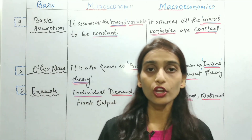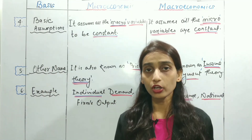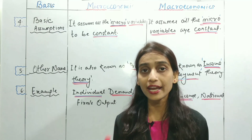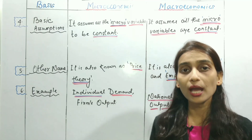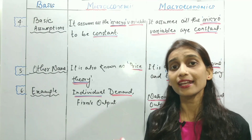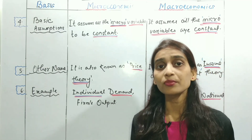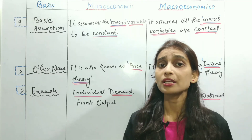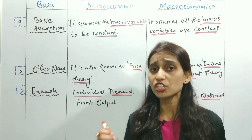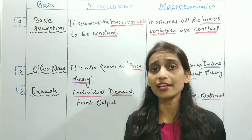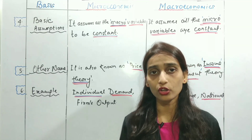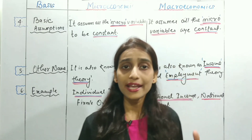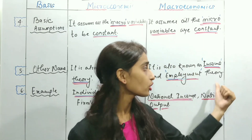Macroeconomics deals with the economy as a whole and aggregate units. Topics like national income, employment, GDP, and GNP are dealt with in macroeconomics. This is why macroeconomics is also known as income and employment theory.